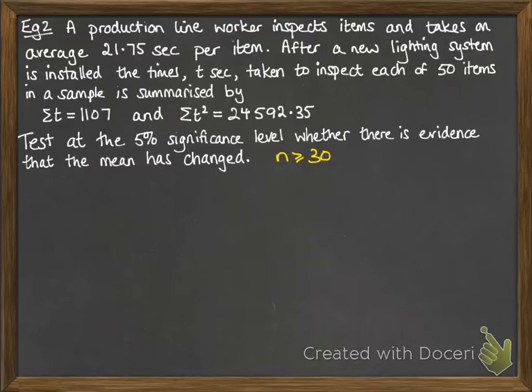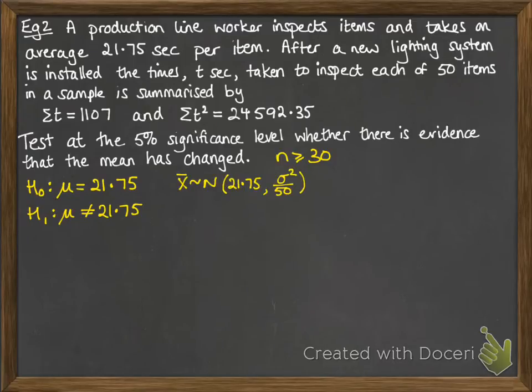Our sample is bigger than 30, so we can make the assumptions we've been talking about earlier. Our null hypothesis is that the mean has stayed at 21.75, and our alternative hypothesis is that it's different, so we're doing a two-tailed test. If the null hypothesis is true, then by the Central Limit Theorem, x̄ follows a normal distribution with those parameters. Now the difference here is we don't know the variance, we haven't been told it in the question, so we need to use an unbiased estimate of the variance from the sample data that we have.